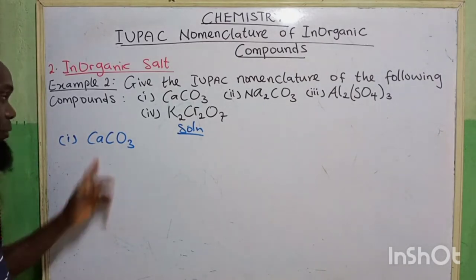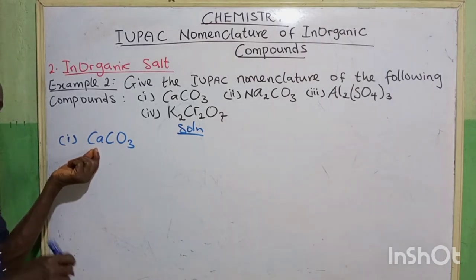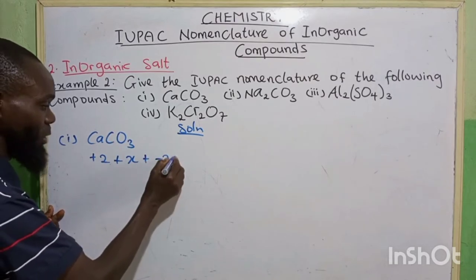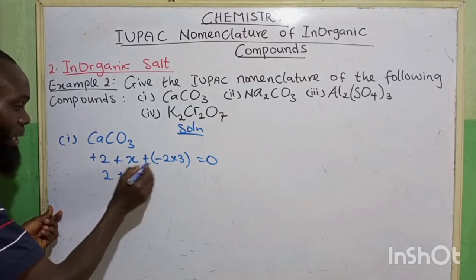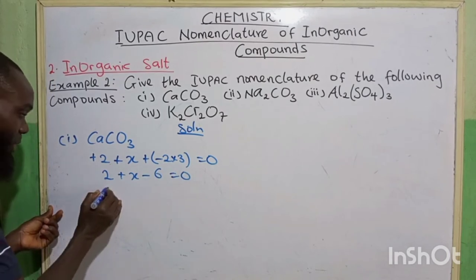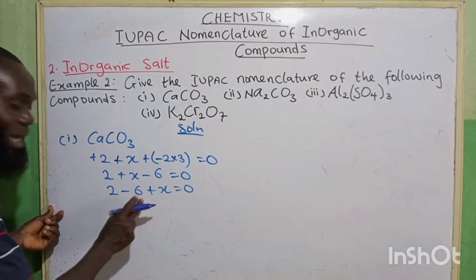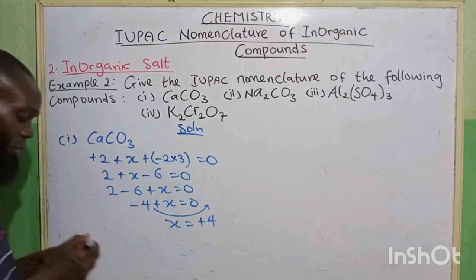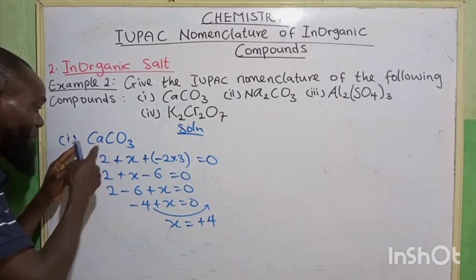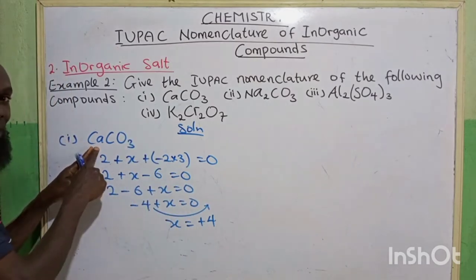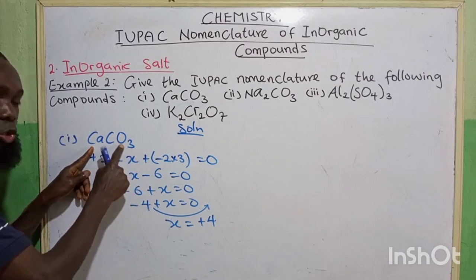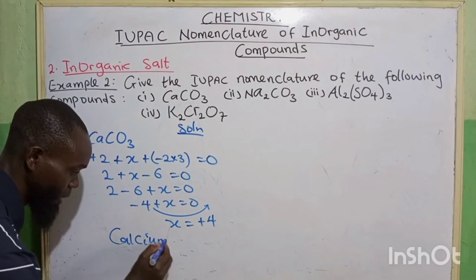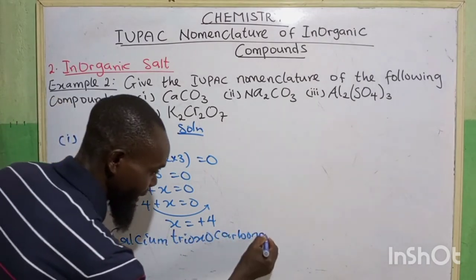To find the IUPAC name of CaCO₃, you find the oxidation number of the central element, which is carbon. The oxidation state of calcium is plus 2, plus carbon (X), plus oxygen minus 2 multiplied by 3, equals 0. So 2 plus X minus 6 equals 0, giving minus 4 plus X equals 0, so X equals plus 4. To name a salt, you start from the first element and move backward: calcium tri oxocarbonate(IV).